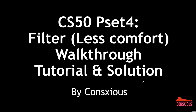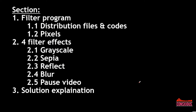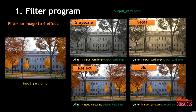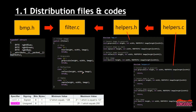Welcome to the CS50 problem set 4 filter walkthrough tutorial and solutions. Today we're going to go through the filter program distribution files and code, pixels, the four effects. Please pause the video before we move into the solution sections. The filter program changes pictures to four different effects from the original image.